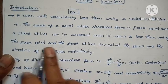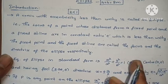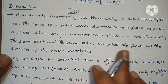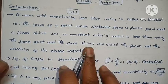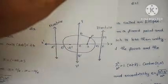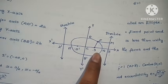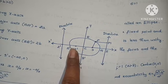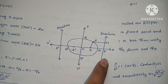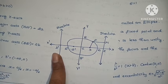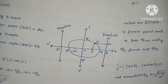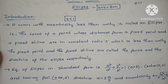The fixed point is called the focus. You already know — parabola also has a fixed point focus and fixed straight line directrix. In this figure, you can see S and S' are fixed points, so these are called foci. Z and Z' are fixed straight lines, these are called directrices.